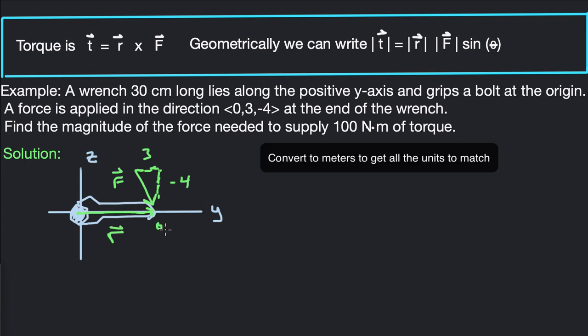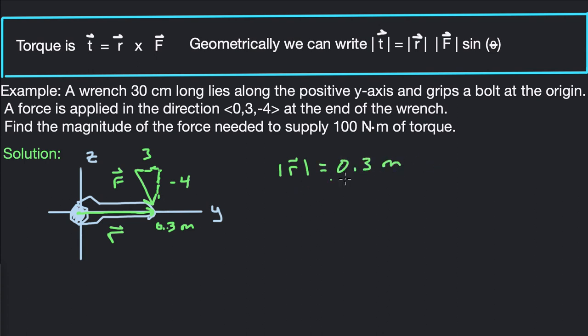So 0.3 meters is the magnitude of R. Magnitude of F is unknown, so that's what we're wanting to find. This is our goal, so this is what we want to find.